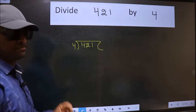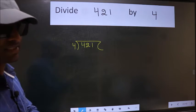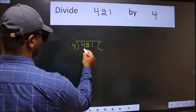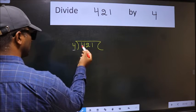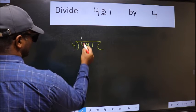This is your step 1. Next, here we have 4. Here also 4. When do we get 4 in 4 table? 4 once 4.